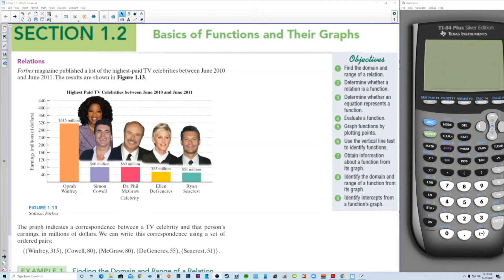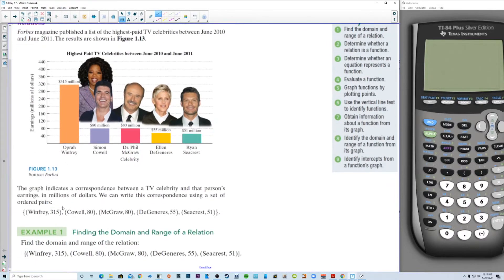This is section 1-2, basics of functions and their graphs. Forbes magazine published a list of the highest paid TV celebrities between June 2010 and June 2011. The results are showing in figure 1.13. So we have some celebrities and then their earnings. The graph indicates a correspondence between a TV celebrity and that person's earnings in millions of dollars. We can write this correspondence using a set of ordered pairs. Winfrey, 315. Cowell, 80 and so on. Find the domain and range of a relation.